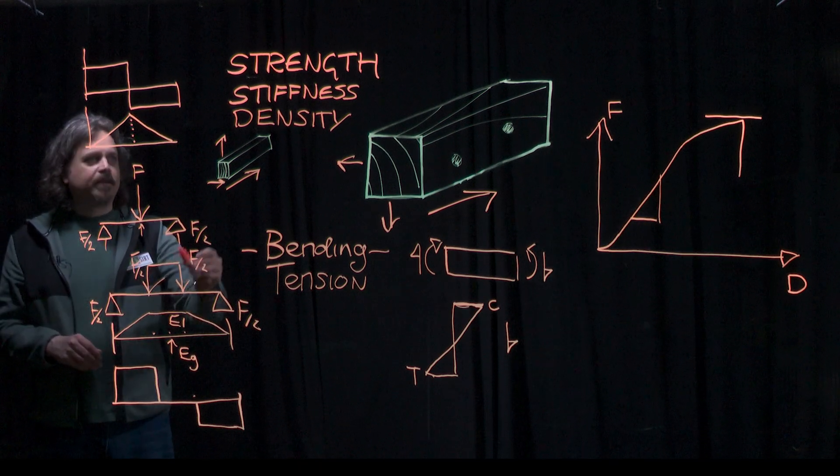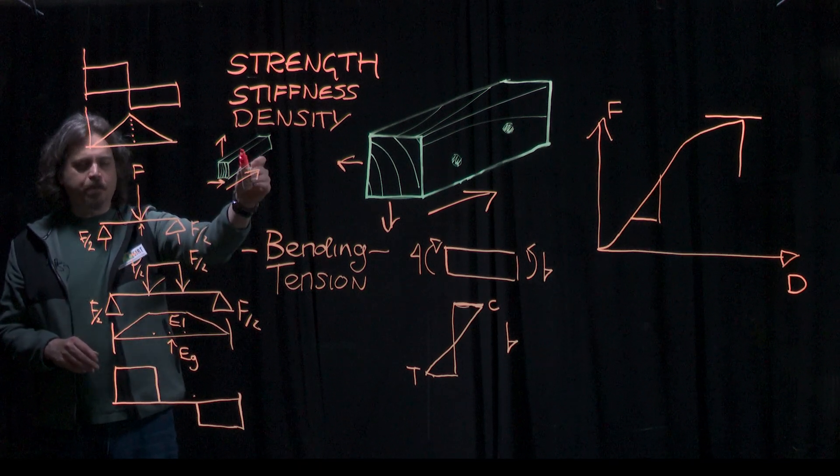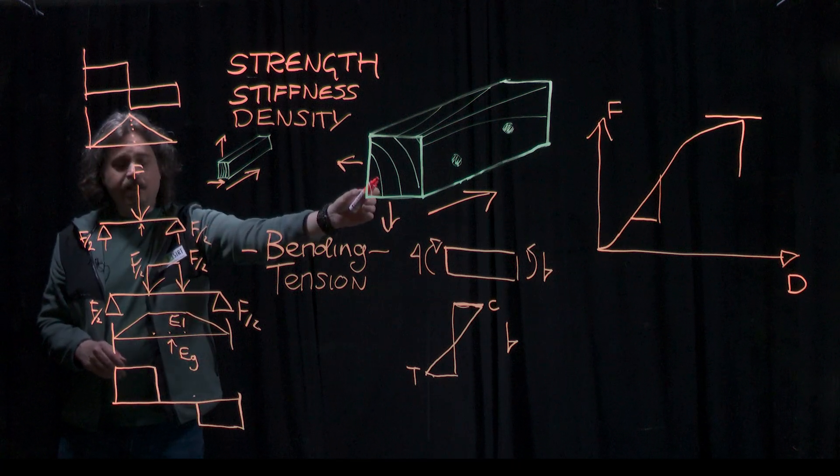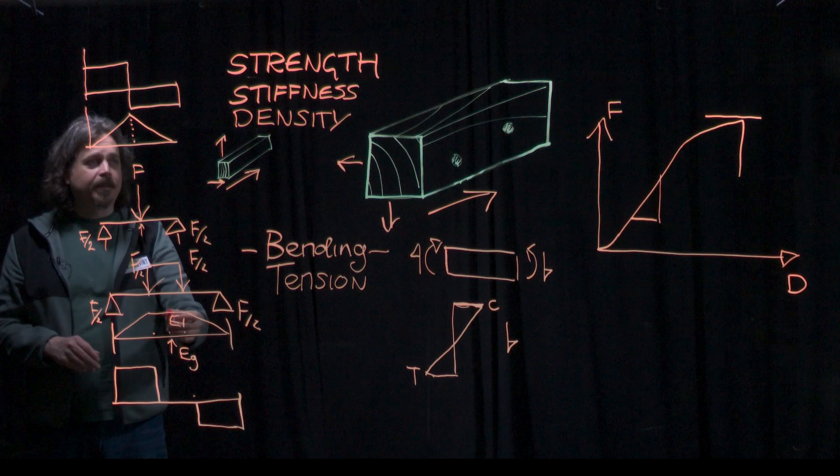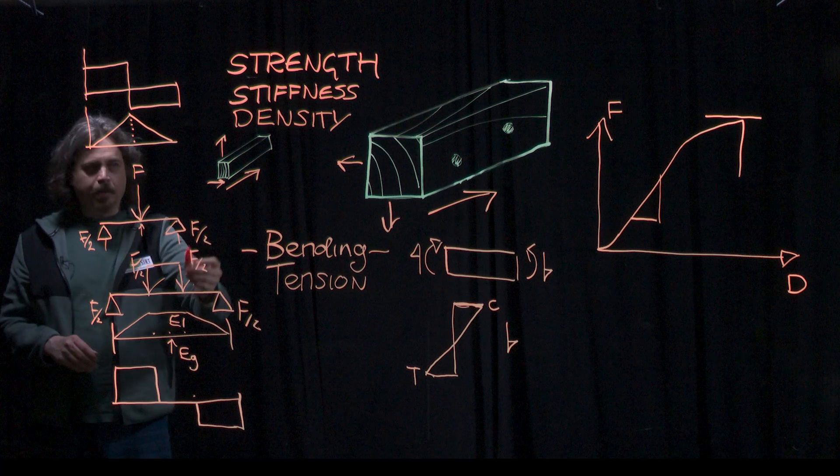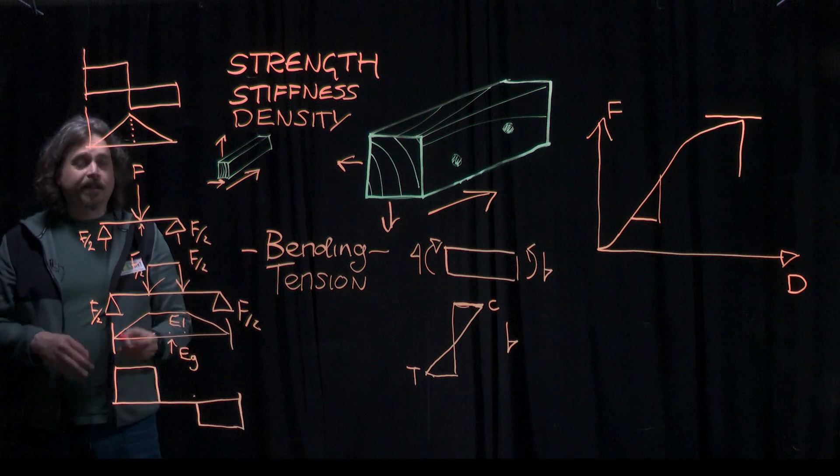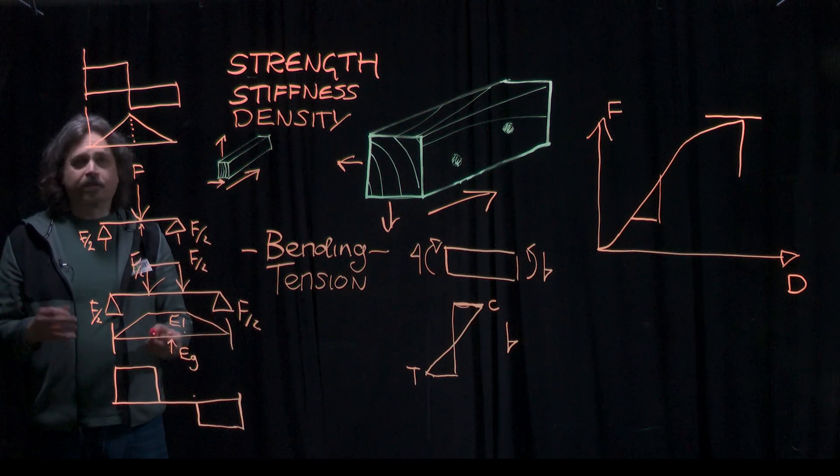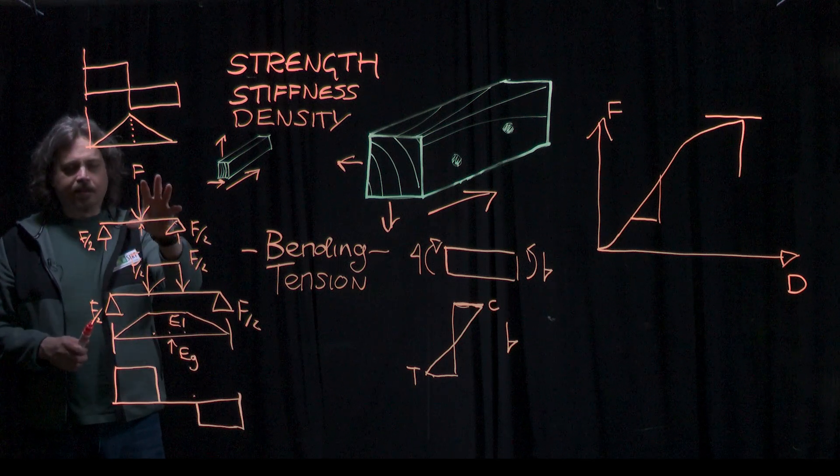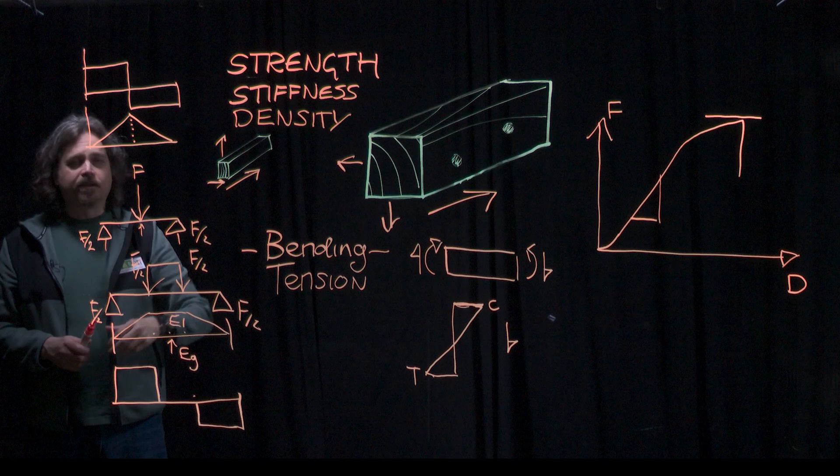I said that the normal test method for small clears is three-point bending, and the normal for full size is four-point bending. There are standards, though, that will allow you to do three-point bending on full size and four-point bending on small clears. So that opens up the question, what is the difference in the result between those two test methods? Does the choice of test setup make a difference to the result?